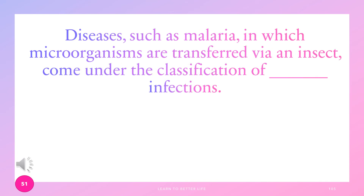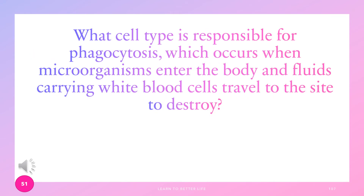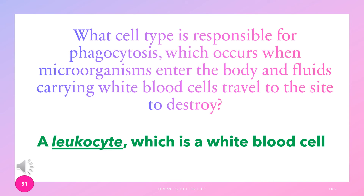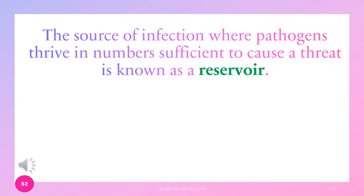Diseases such as malaria, in which microorganisms are transferred via an insect, come under the classification of vector-borne infections. What cell type is responsible for phagocytosis, which occurs when microorganisms enter the body and white blood cells travel to the site to destroy them? A leukocyte, which is a white blood cell. The source of infection where pathogens thrive in sufficient numbers to cause a threat is known as a reservoir.